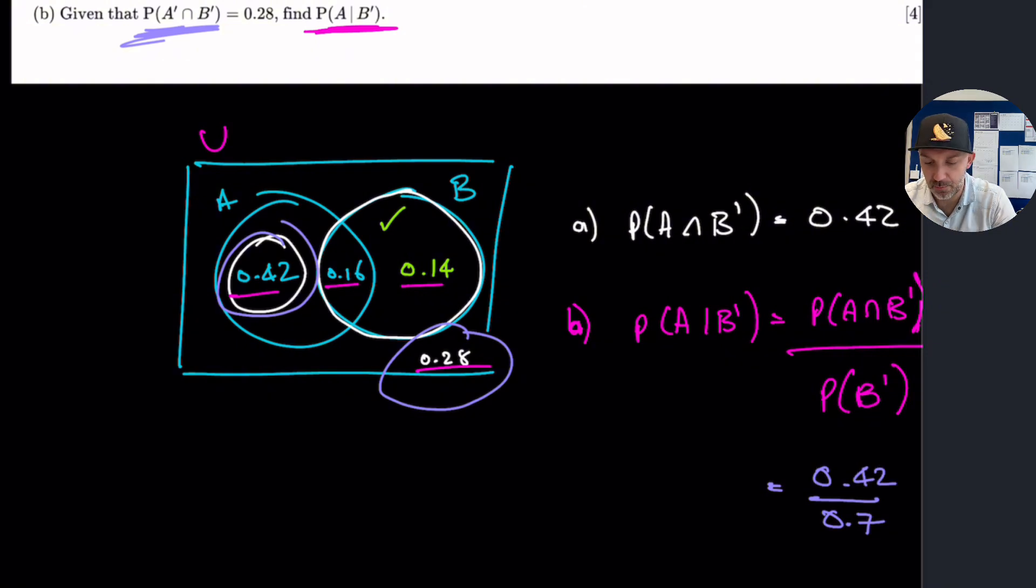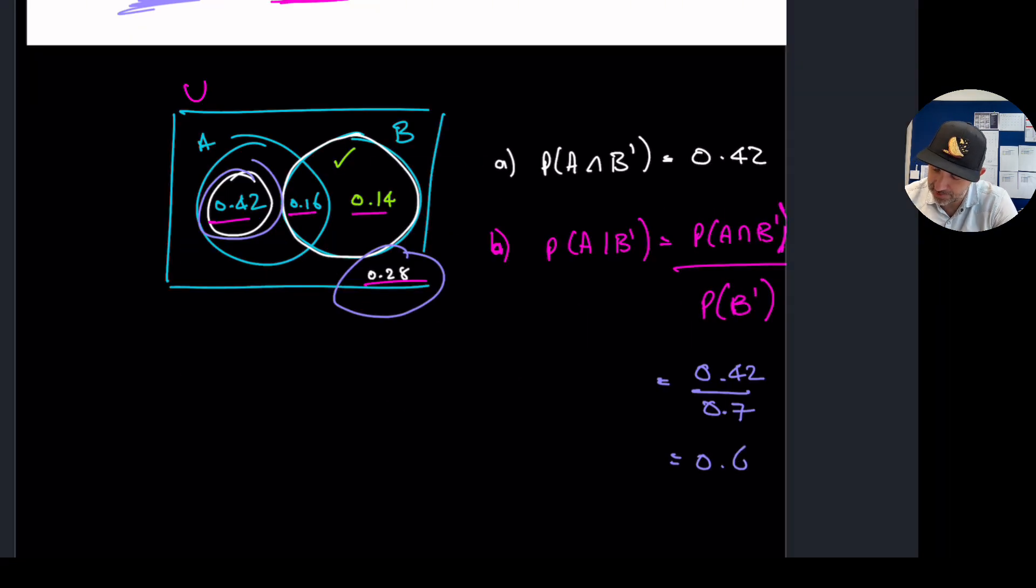Okay. 0.42 divided by 0.7. Okay. Is 0.6. And that is the answer.